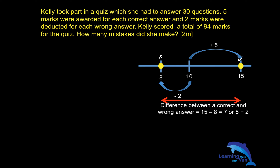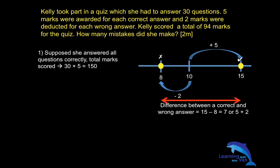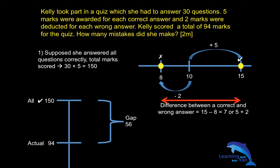So here is the four-step method. Step one: since the question asks how many mistakes she made, suppose she answered all 30 questions correctly. She would have scored 30 times 5, which is 150. But we know she did not score all questions correctly, because her actual score is only 94. So there is a gap of 56 — that is, 150 minus 94 equals 56. I need to close that gap.